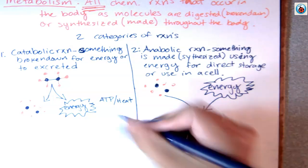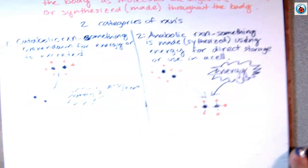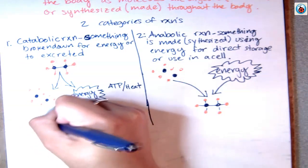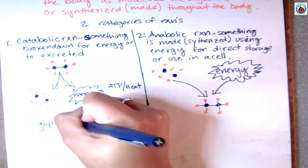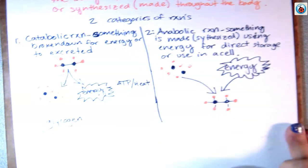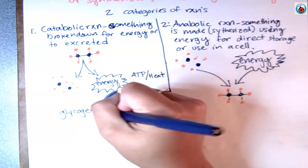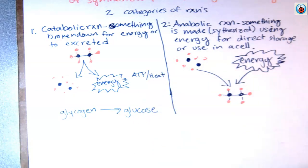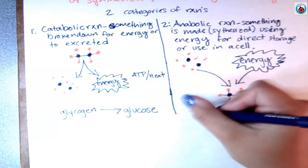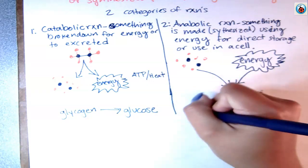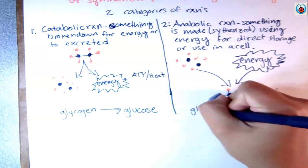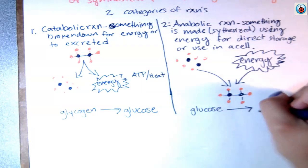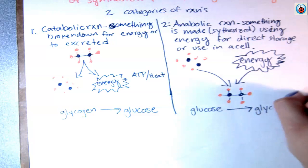An example going in both directions: for catabolic, you might start with glycogen, which is an energy storage form of sugar. When you want to access that sugar, you break it down into individual pieces, which would be glucose. Going the other way — if you're trying to store it for later — you take the individual glucose pieces, put them together using a little energy, and store it as glycogen.